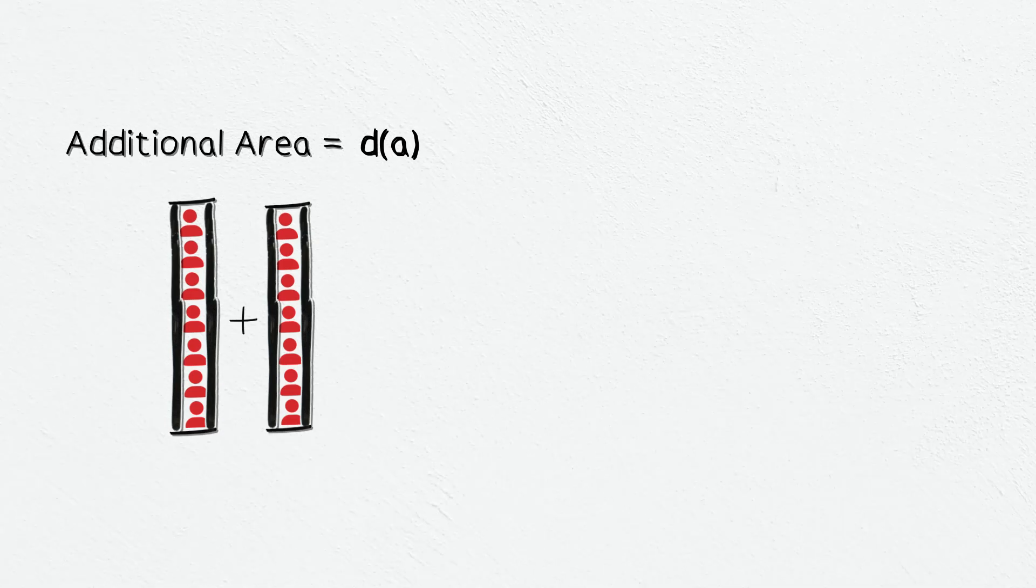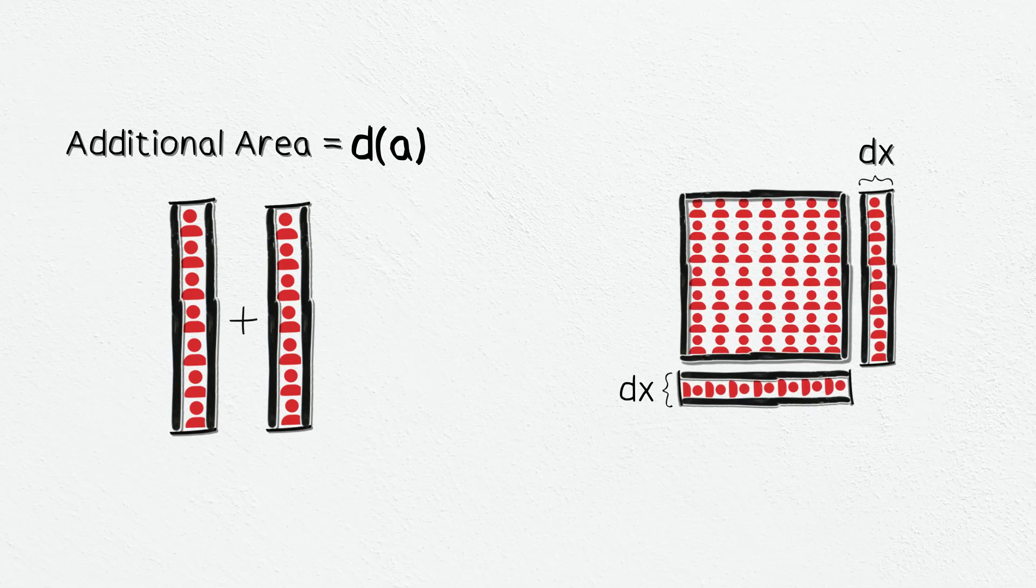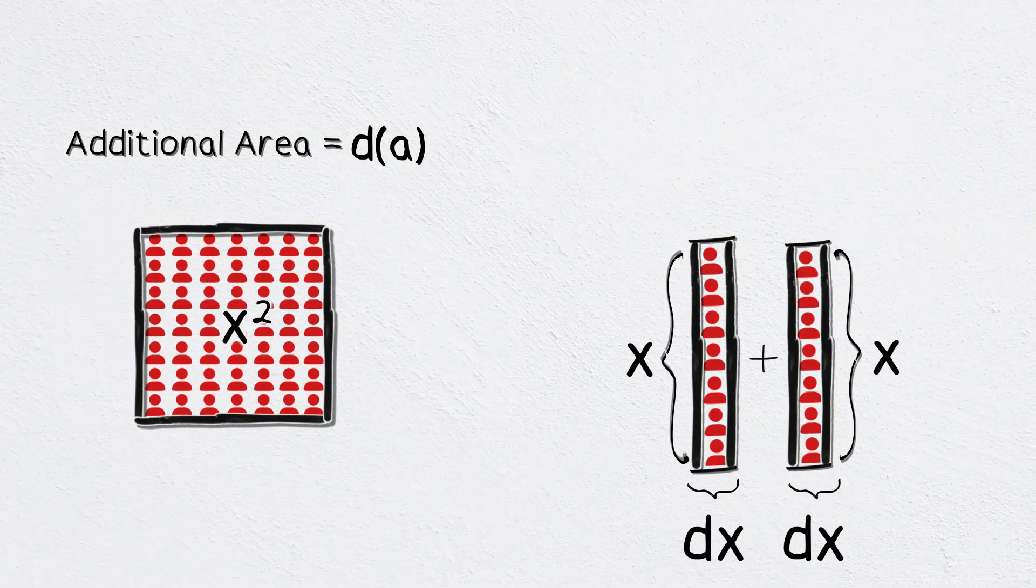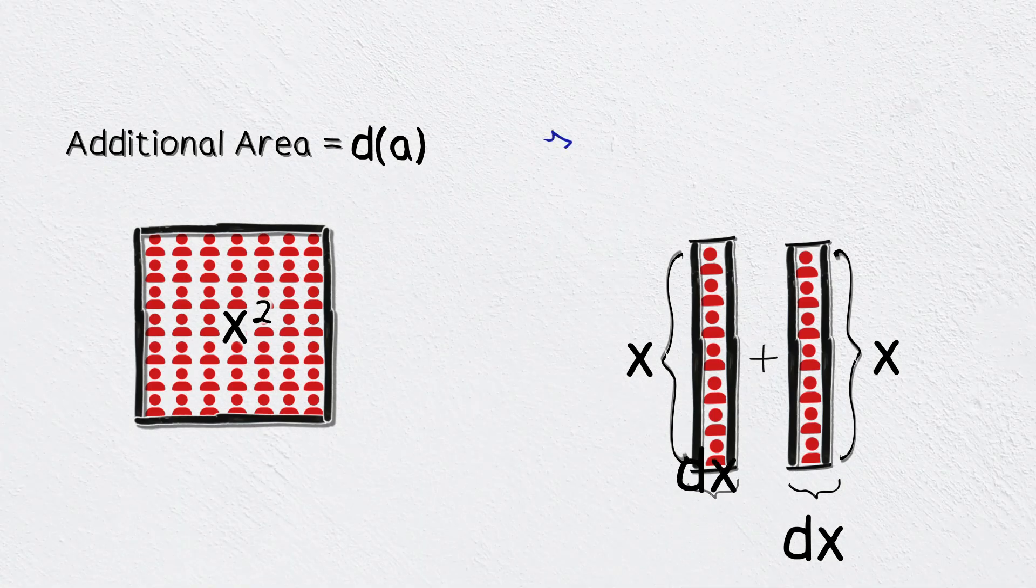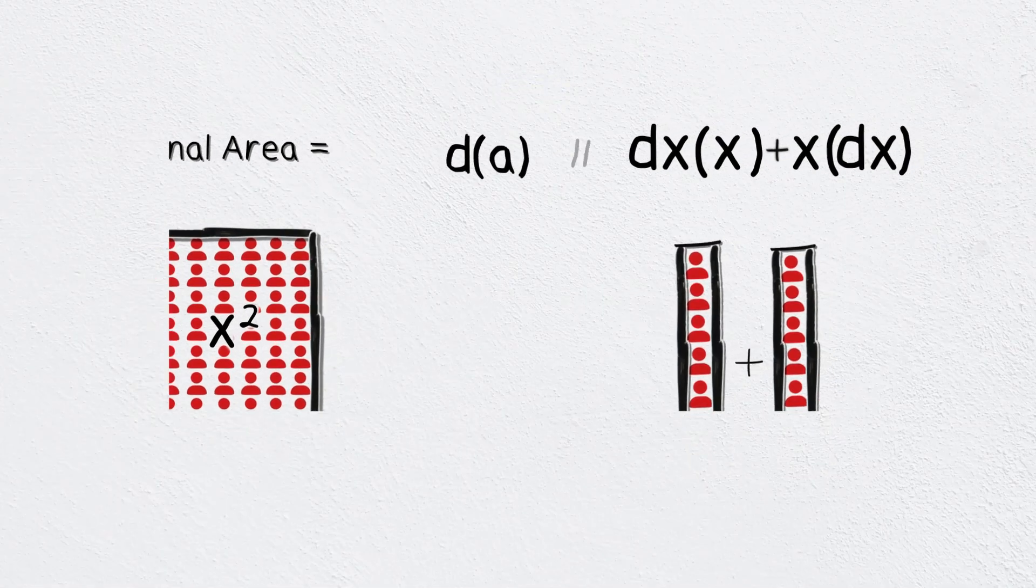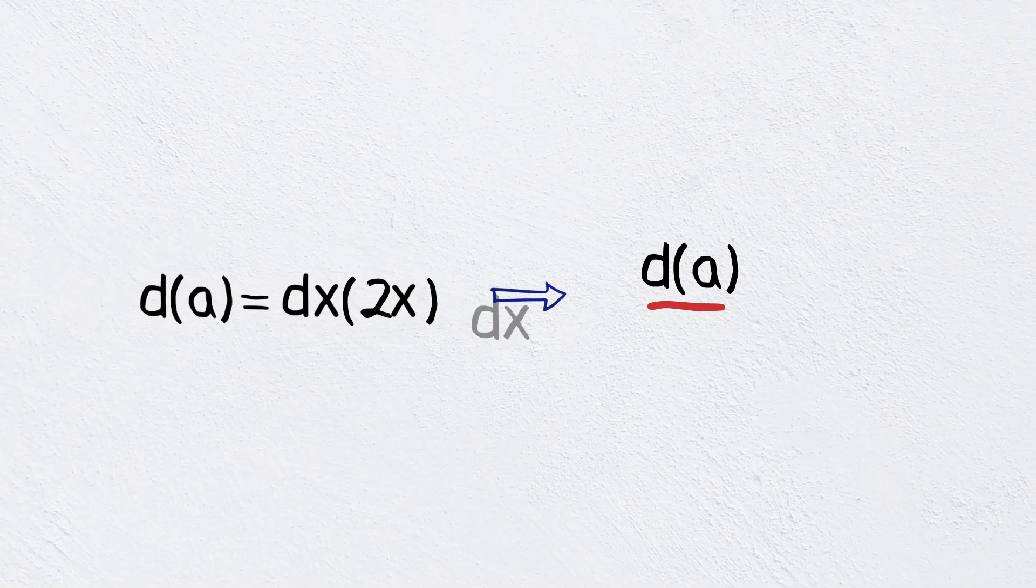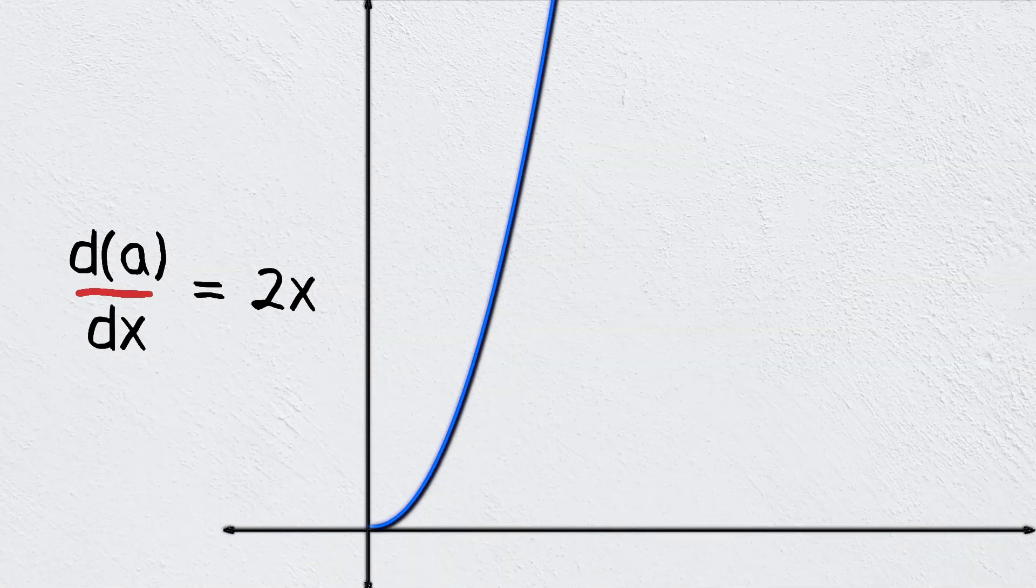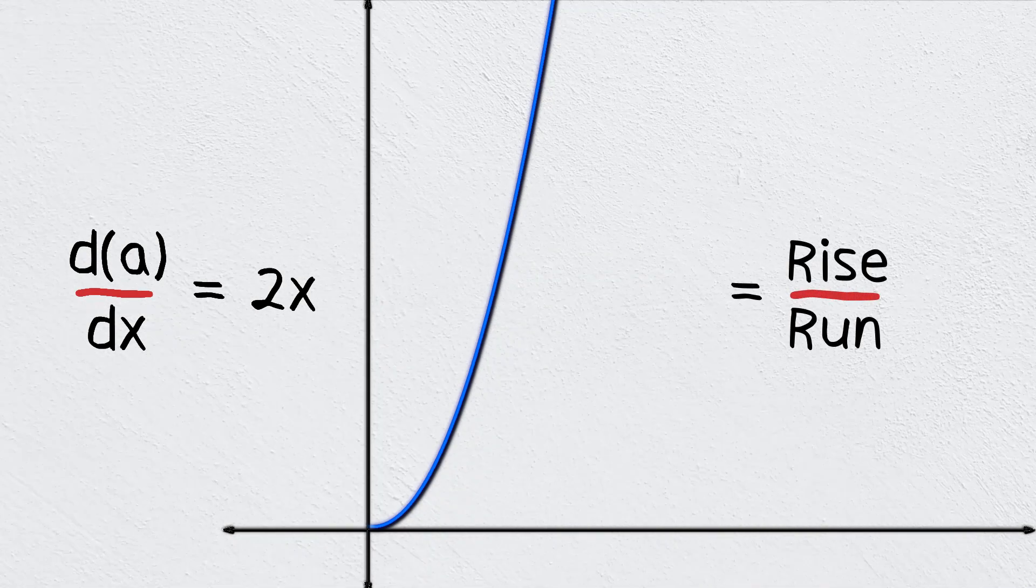Let's call the growth of area in that time da and those tiny differences in width dx. If we assume the area of the original box to be x squared, then the sum of the additional areas da will be dx times x plus x times dx. On rearranging this equation, we get da divided by dx equals 2x. Now if we relate this equation to the graph shown earlier, this ratio is precisely the slope of this curve.